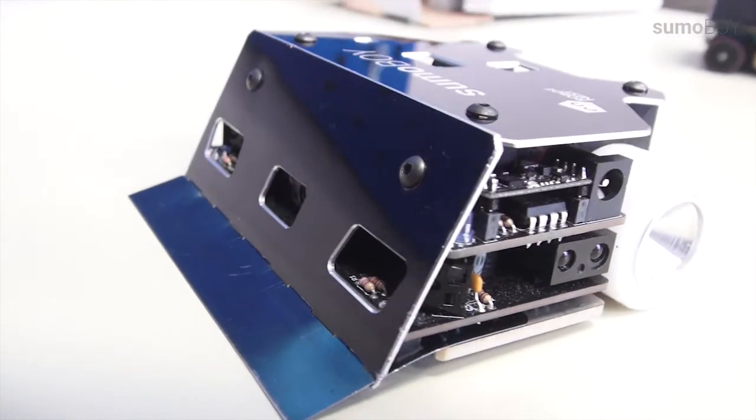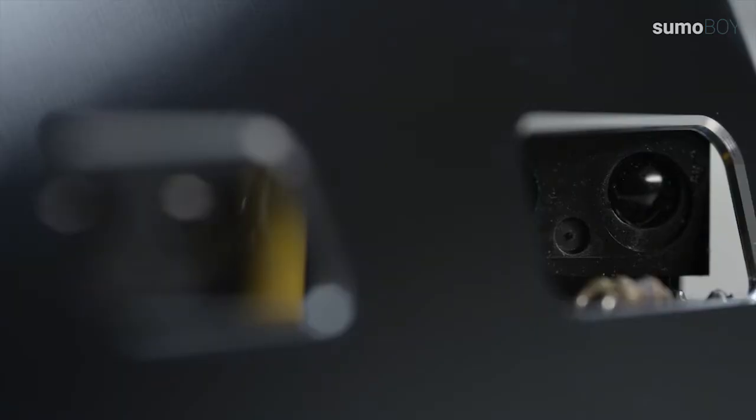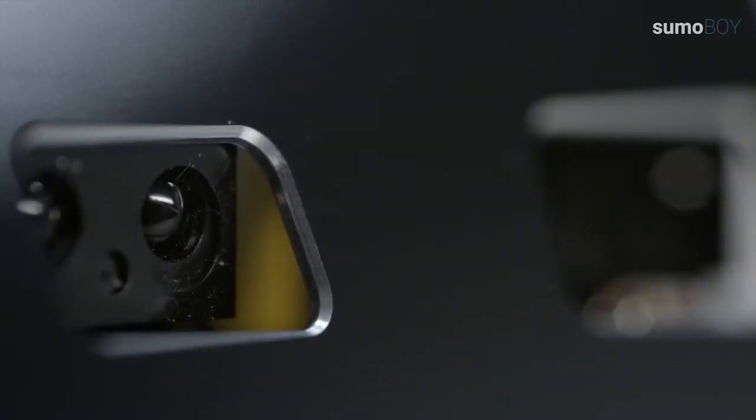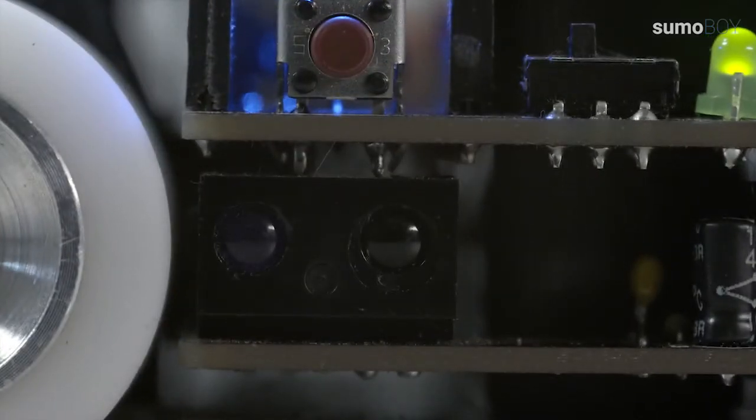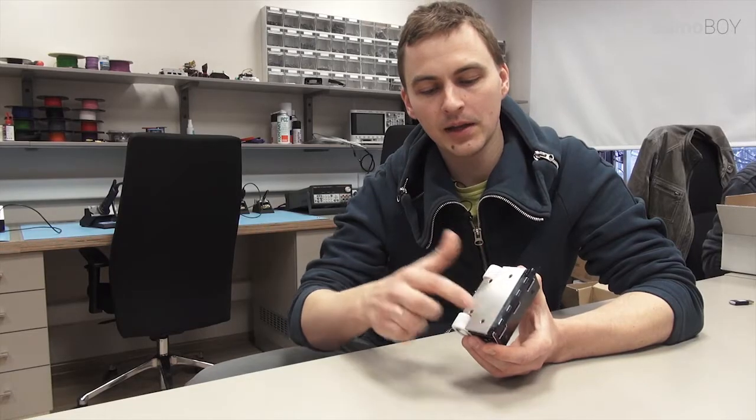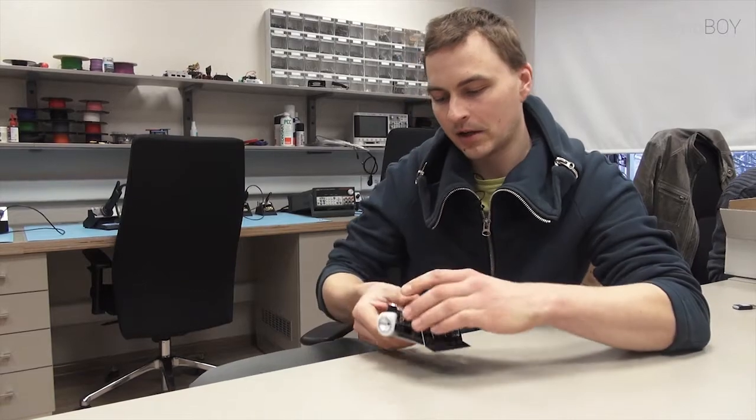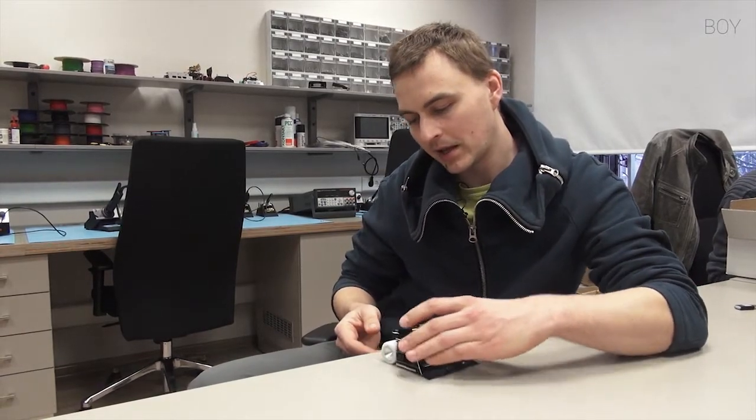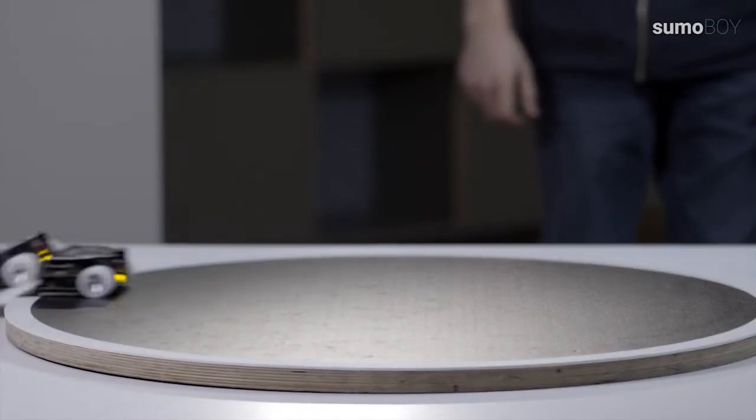For programmer, this platform is quite an interesting thing. Because you have five infrared sensors, which are placed to locate the opponent. And you also have three infrared line sensors for robot to see where is the borderline of the ring.